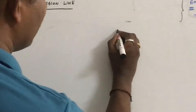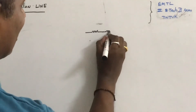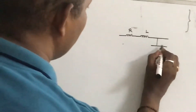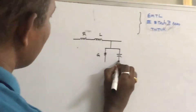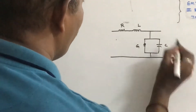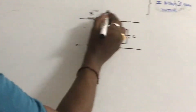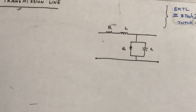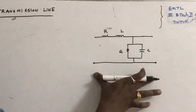The equivalent circuit of the transmission line consists of R, L, G, and C. This is the equivalent circuit of the transmission line per unit length — R is the resistance per unit length, L is the series inductance per unit length, G is the conductance per unit length, and C is the capacitance per unit length. R, L, G, C are called the primary constants of the transmission line.